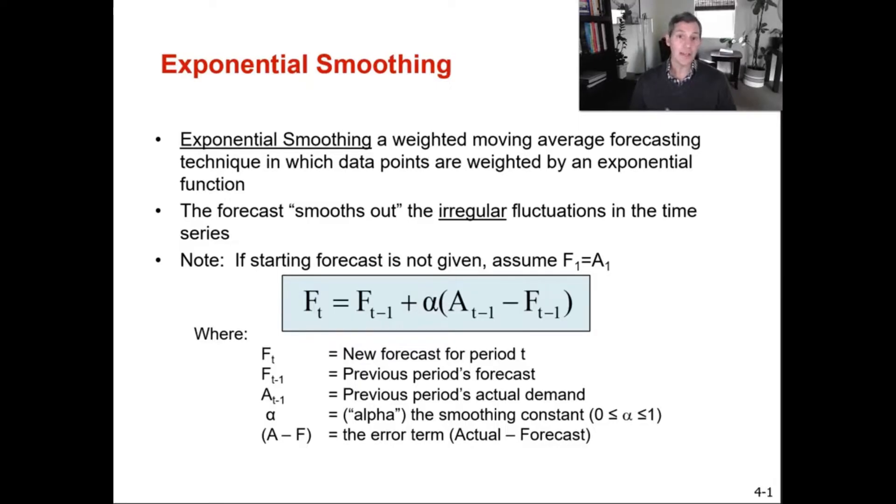So all we're doing is applying an alpha or a smoothing constant to the previous period and that's how we go about forecasting future periods. Exponential smoothing is a weighted moving average forecasting technique in which data points are weighted by an exponential function. The forecast smooths out the irregular fluctuations in time series.